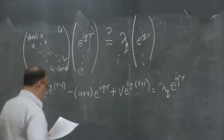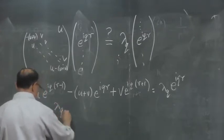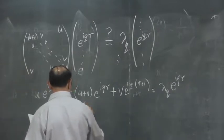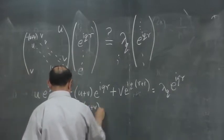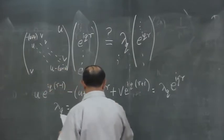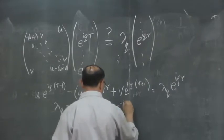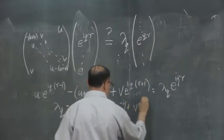And you are left with the equation which determines lambda_q. So, here is the formula: lambda_q is equal to (1 - u - v) plus u times e^(-iq) plus v times e^(iq).